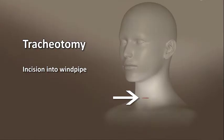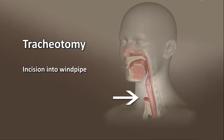We'll start with some basic definitions. A tracheotomy is actually an incision in the trachea, or windpipe. It comes from two Greek words: the root 'tom,' meaning to cut, and the word 'trachea,' referring to the windpipe.